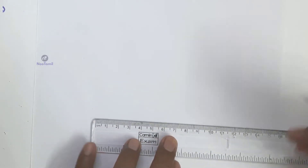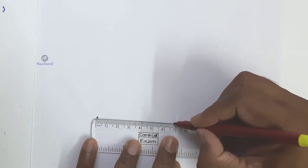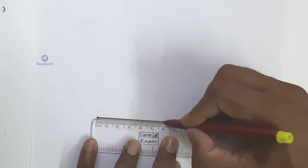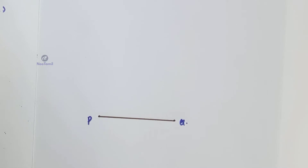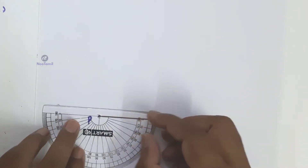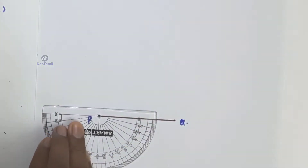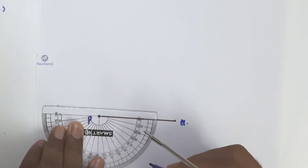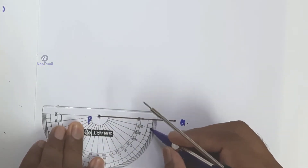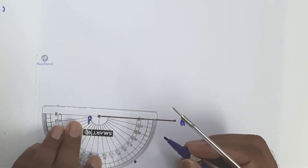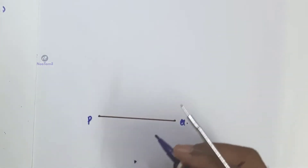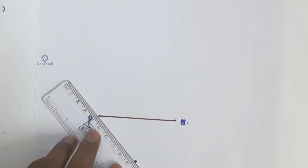This is the fair diagram. First, use the scale and take PQ equal to 6.8 cm, marking vertices P and Q. At point P, draw angle QPE equal to 50 degrees — marking 0 degrees, 10 degrees, 20 degrees, 30 degrees, 40 degrees, 50 degrees — so angle QPE equal to 50 degrees is marked. Draw the ray PE.